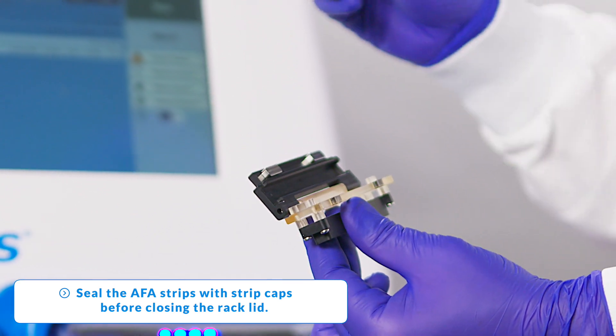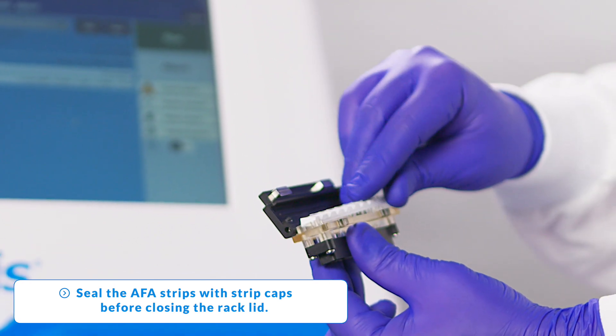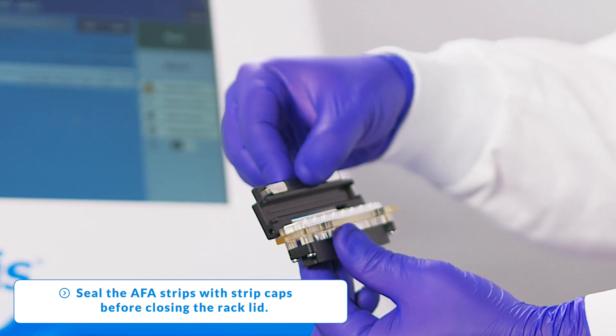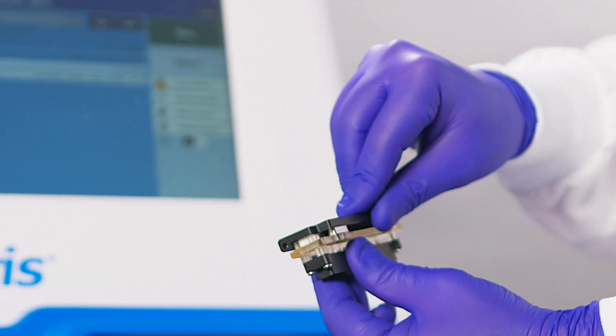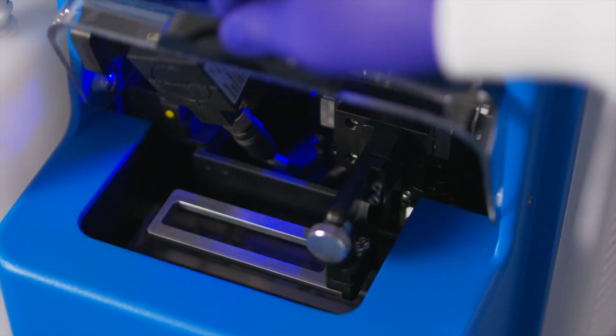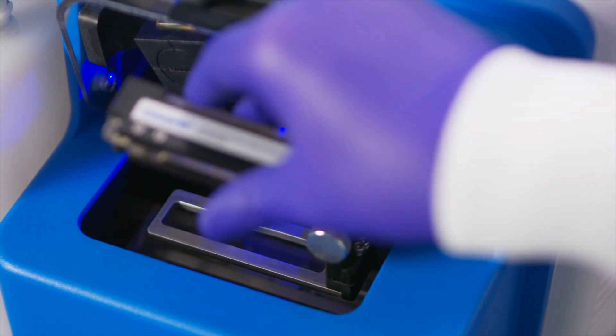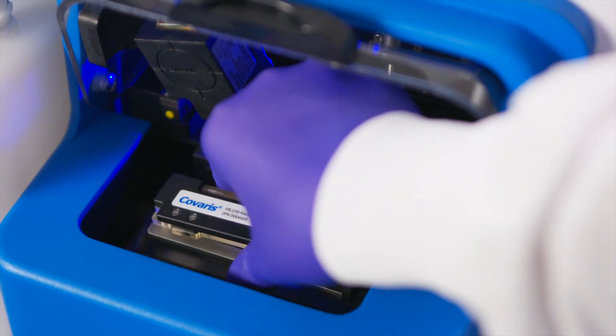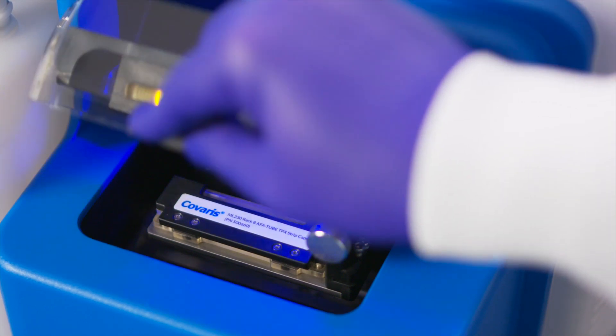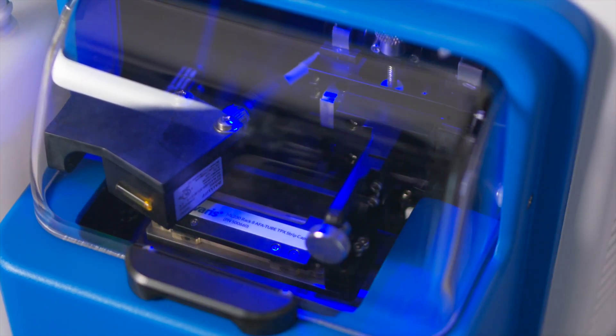Open the hinged rack and insert the 8-AFA tube TPX strip. The rack is keyed so that the strip only fits in one orientation. Close the hinged rack cover to secure the strip. The cover is held in place with magnets. Open the ML230 safety cover and place the tubes and rack assembly into the sample tray. Close the safety cover to ensure that the door status in Sonolab turns to a green check.